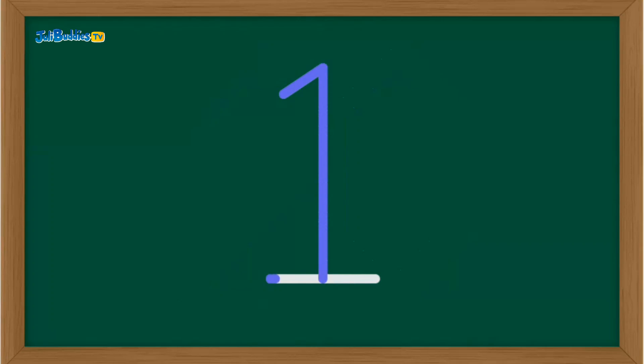Let's start with number one. Watch closely. Draw a straight line down and then a little line across the bottom. You got it! That's number one.